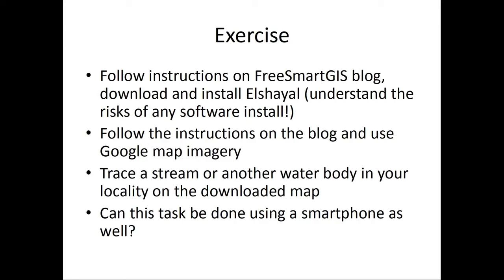I will conclude part two with some ideas on exercises. You should go to the FreeSmart.js blog and download and install L-Shell. Remember that whenever you download and use software, there are always risks involved — please understand them before doing so. After you download, follow the instructions on the blog and use Google Map imagery. Trace a stream or another water body in your locality on the downloaded map. Also look at the possibility of doing this on a smartphone. This is an open-ended exercise carrying no grade, but it will give you an idea of what GIS can offer as potential support for agriculture and small farmers. Thank you.